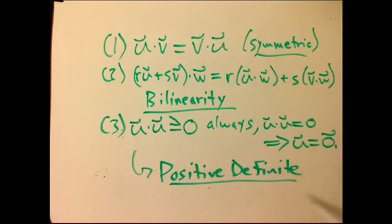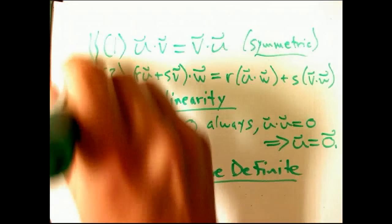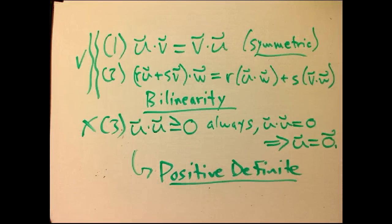This is called positive definiteness. I'll just say it is positive definite, the adjective. Okay, turns out that what we're going to do to invent relativity, the kind of geometry that models relativity, is we're going to leave these two alone, and we're going to modify that.